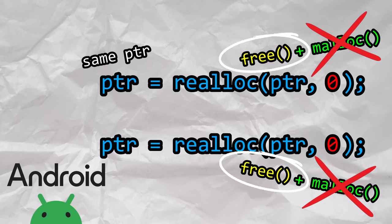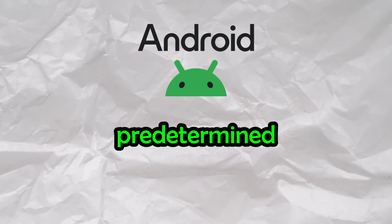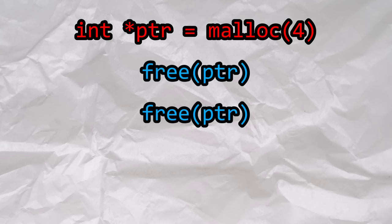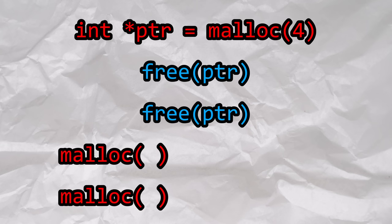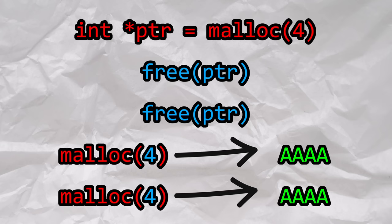As we can now see, calling realloc twice with a size of zero will actually cause a double free. In Android, rather than causing undefined behavior, it causes predetermined behavior: when you double free memory of size n, the next two subsequent malloc calls of size n are going to return the same address. For example, if we malloc four bytes and then double free it, the next two subsequent calls to malloc with four bytes will return the exact same memory address. This is incredibly dangerous behavior.